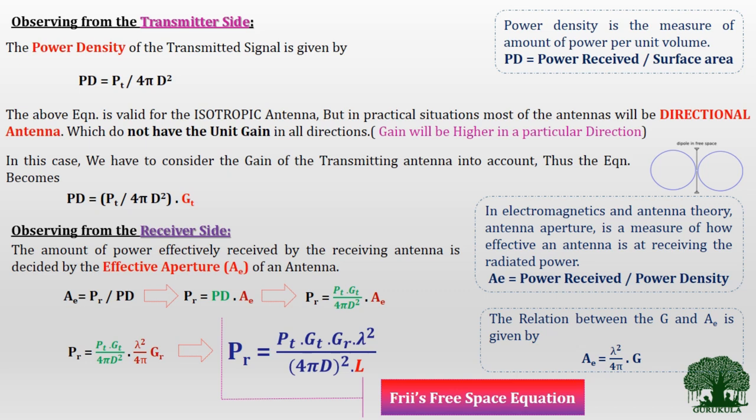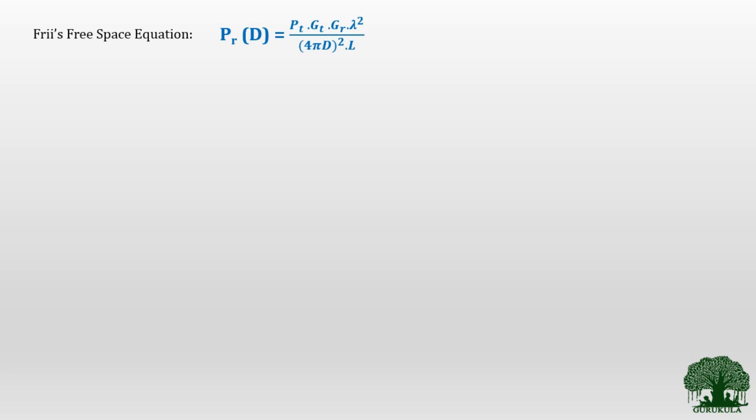So today in this video, we will see how to frame a path loss model from the Friis free space equation. We know that PR(D) — the received signal strength — drops in terms of the distance between the transmitter and the receiver. We will keep the Friis free space equation as a base equation and then try to formulate a path loss model.